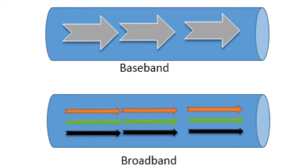The entire bandwidth of a baseband system carries only one data signal and is generally less than the amount of bandwidth available on a broadband transmission system.